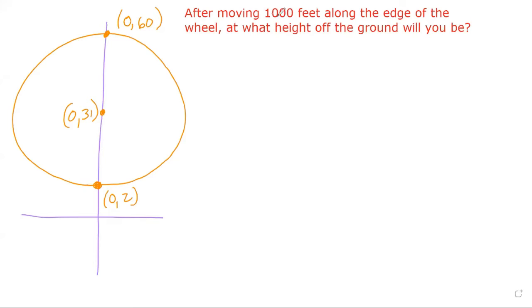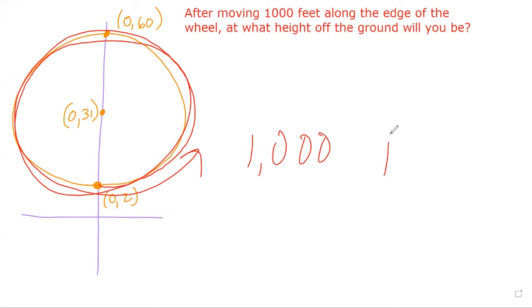Here, we're going to move a thousand feet along the edge of the wheel, along the circumference. So we're starting here and we're going to move along the edge over and over again until we've traveled a thousand feet. So this conversation has to do with the circumference of a circle.